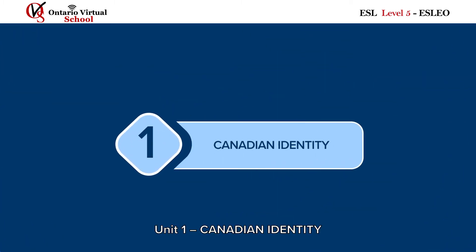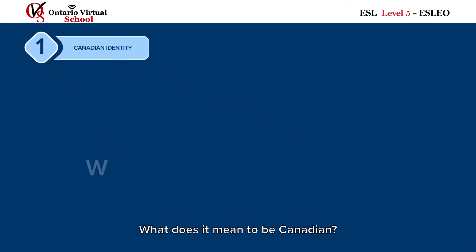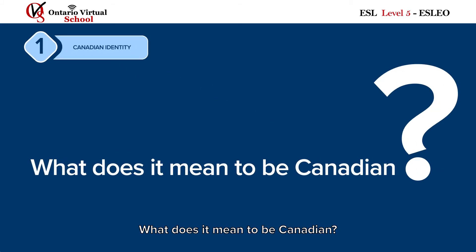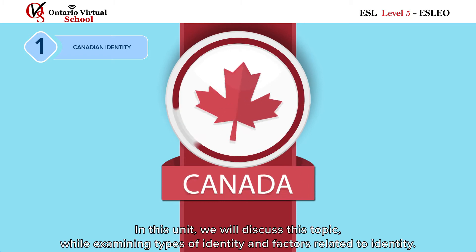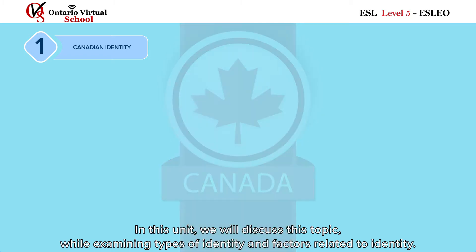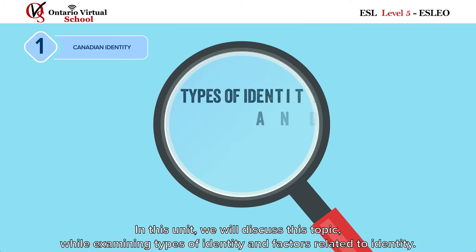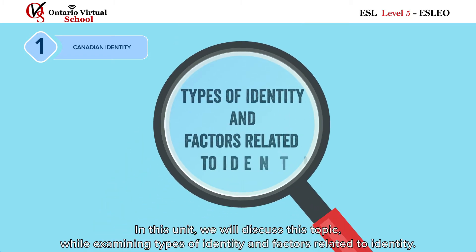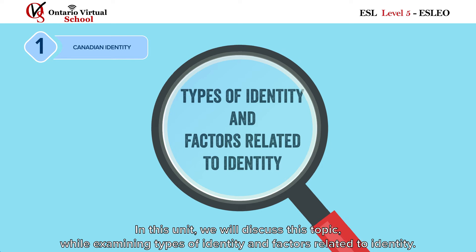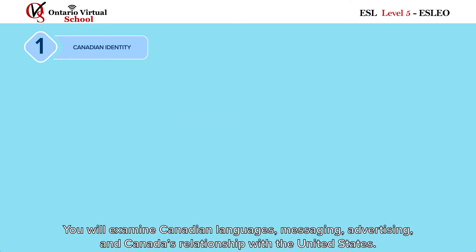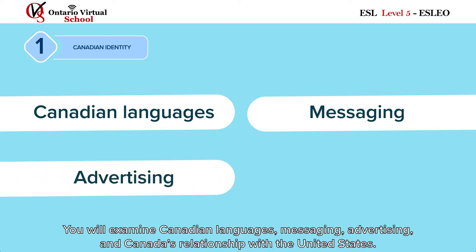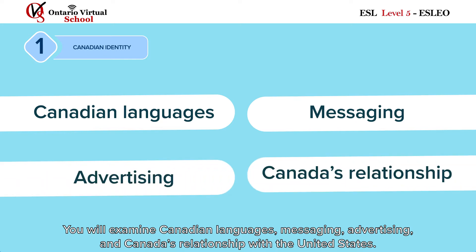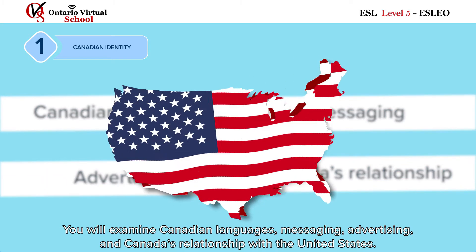Unit 1: Canadian Identity. What does it mean to be Canadian? In this unit, we will discuss this topic while examining types of identity and factors related to identity. You will examine Canadian languages, messaging, advertising, and Canada's relationship with the United States.